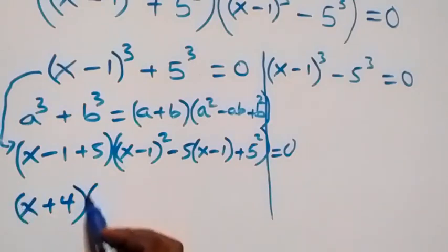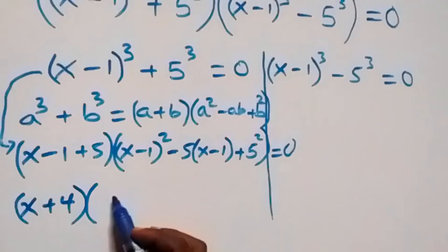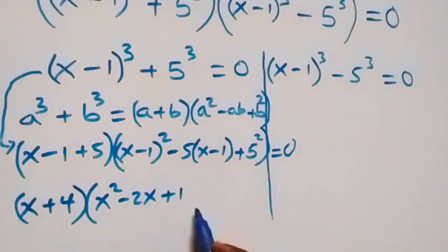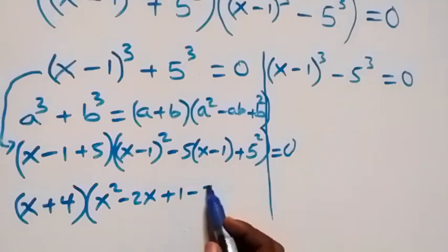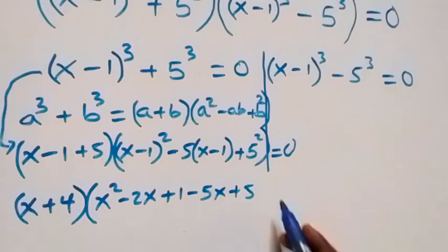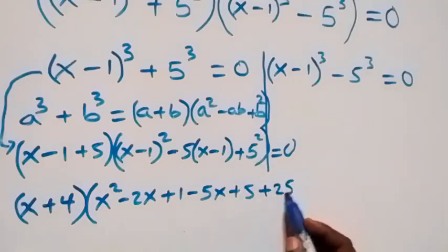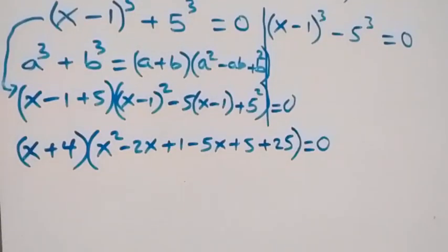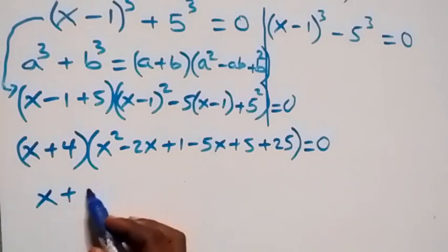Into bracket, expanding: x squared minus 2x plus 1, then minus 5 open bracket gives minus 5x plus 5, then plus 5 squared that's plus 25, equals to 0. This can be written as x plus 4 into bracket.